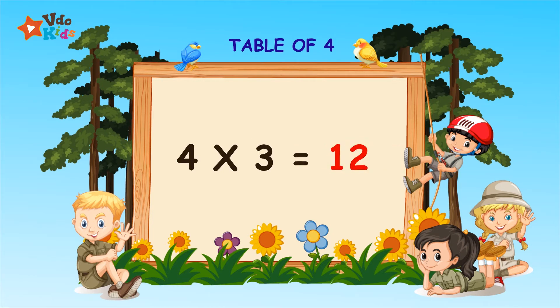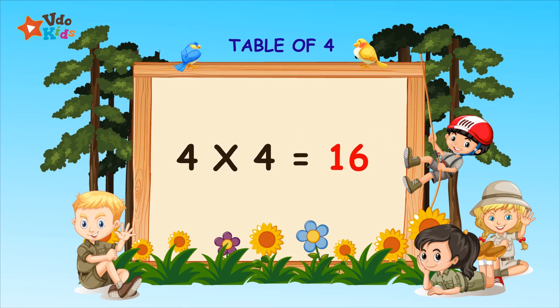Four threes are twelve. Four threes are twelve. Four fours are sixteen. Four fours are sixteen.